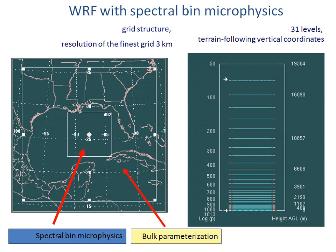We used this type of microphysics with some simplification to implement it in the WRF model, developing WRF with spectral bin microphysics. We used this model for simulation of tropical systems — first simulating different hailstorms and squall lines — but in this particular case, we simulated Hurricane Katrina and its landfall.